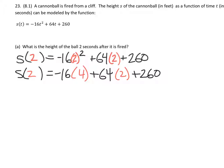Plus 64 times 2 plus 260. From here we're just going to go ahead and do multiplication and division from left to right, and since there's only multiplication, we'll start with negative 16 times 4 and then do 64 times 2.